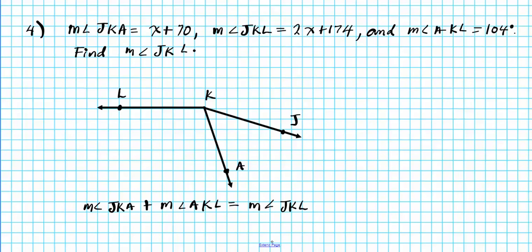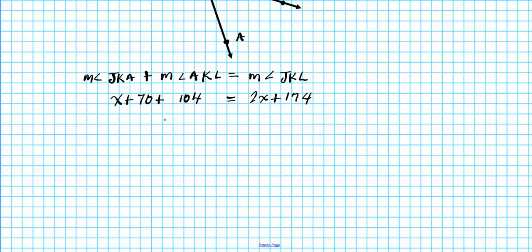We carry out the substitution: the measure of angle JKA is x plus 70, plus the measure of angle AKL is 104, and the measure of angle JKL is 2x plus 174. On the left side, combining the constants 70 and 104 gives us x plus 174 equals 2x plus 174.